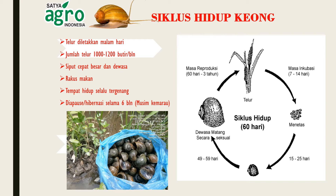Telur diletakkan malam hari, jumlah telur dari 1000-1200 butir per bulan. Siput cepat besar dan dewasa, rakus makan, tempat hidup selalu tergenang. Dia berpause selama 6 bulan pada saat terjadi musim kemarau.